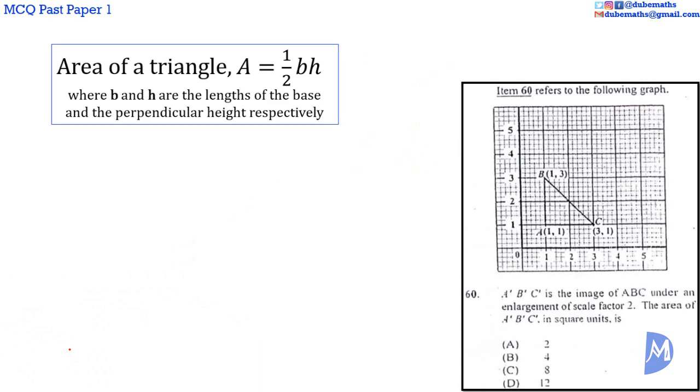Question 60. The area of ABC, a triangle, is a half base by height. The area is equal to a half, multiply by the base. The base is 2 units. Multiply by the perpendicular height, which is 2 units long.